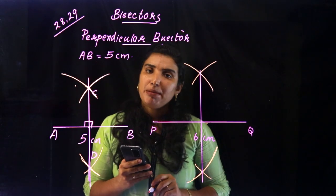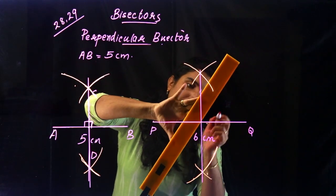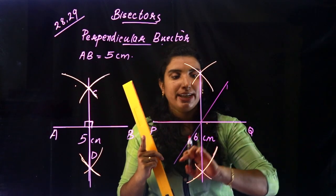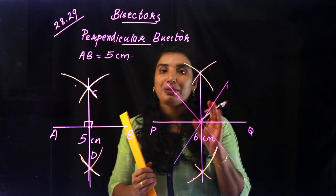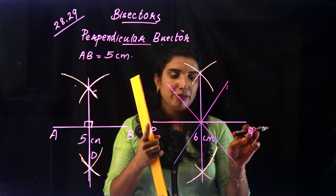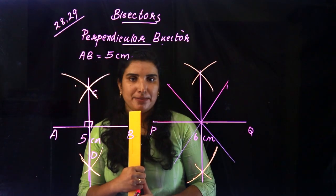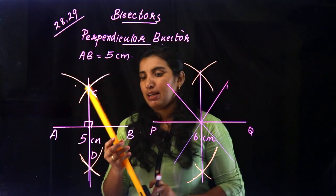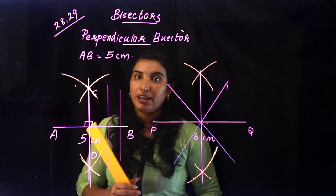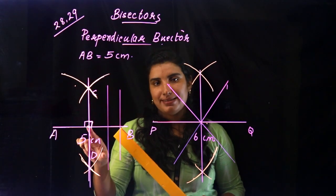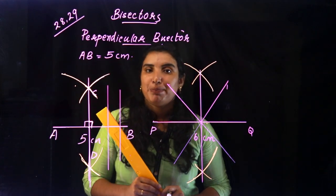Here we have different bisectors and here we have the same bisectors. This one is perpendicular bisectoral. If you look at the peak line, this line is bisectoral. This one is perpendicular bisectoral at 90 degrees. The bisectoral is the correct center. Then, the bisectoral is a line.